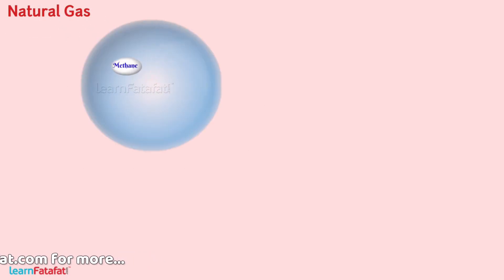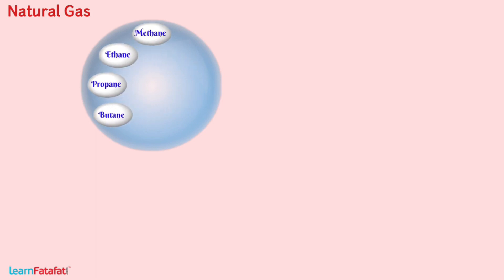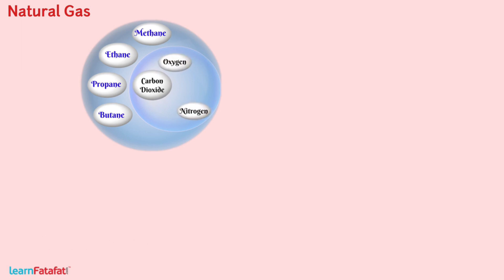Natural gas consists of methane, ethane, propane and butane. It may also contain carbon dioxide, oxygen, nitrogen, hydrogen sulfide and helium.